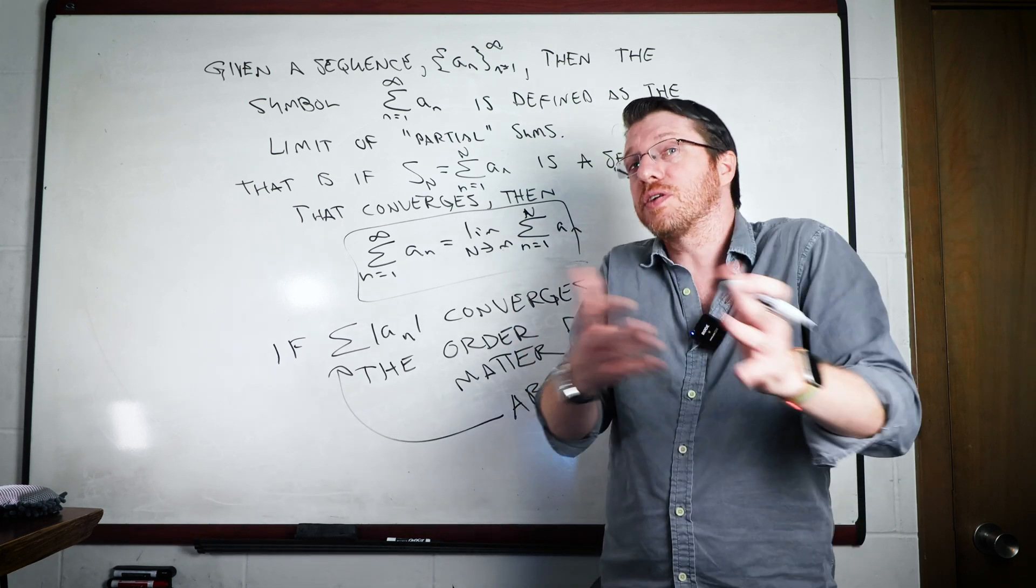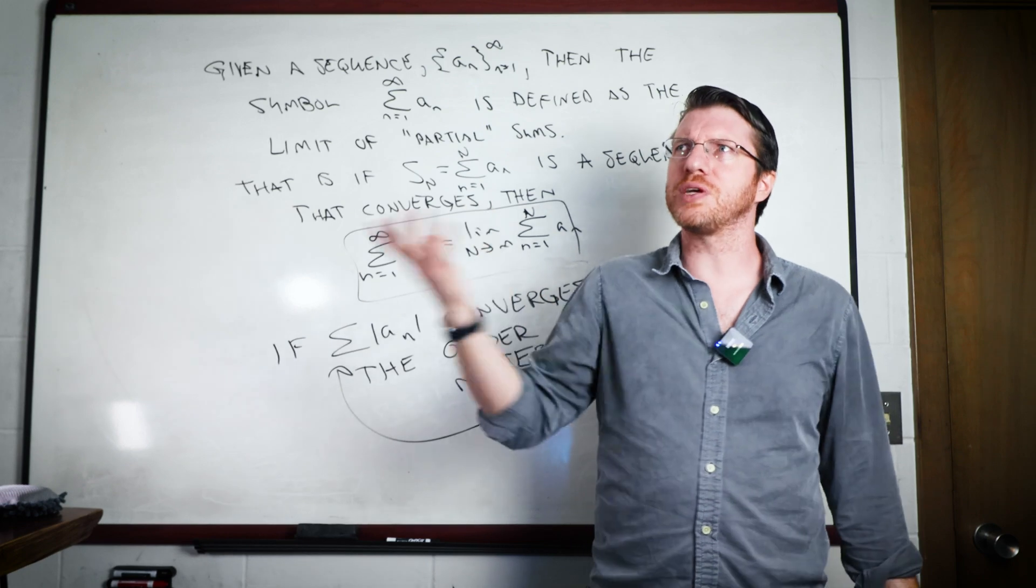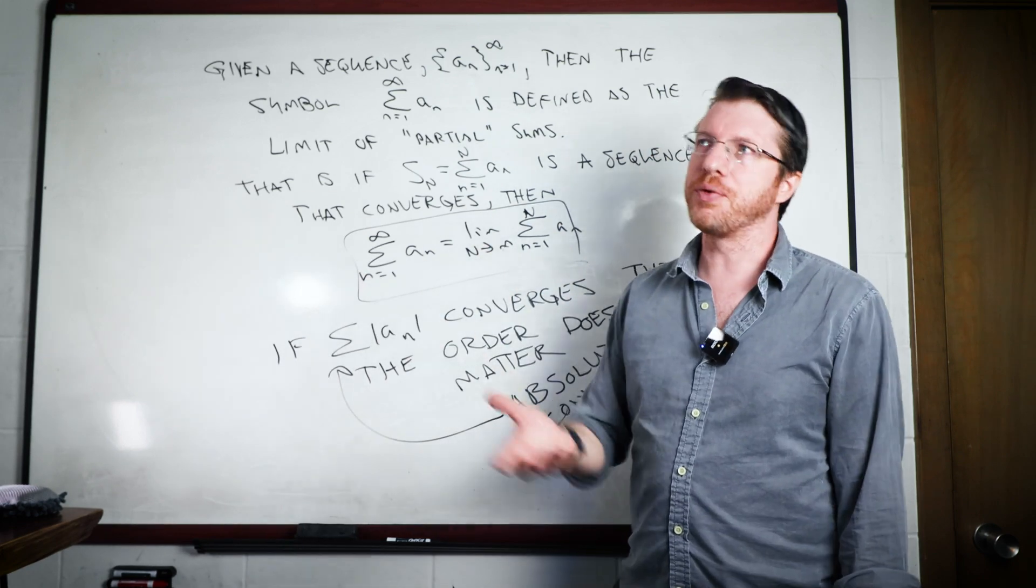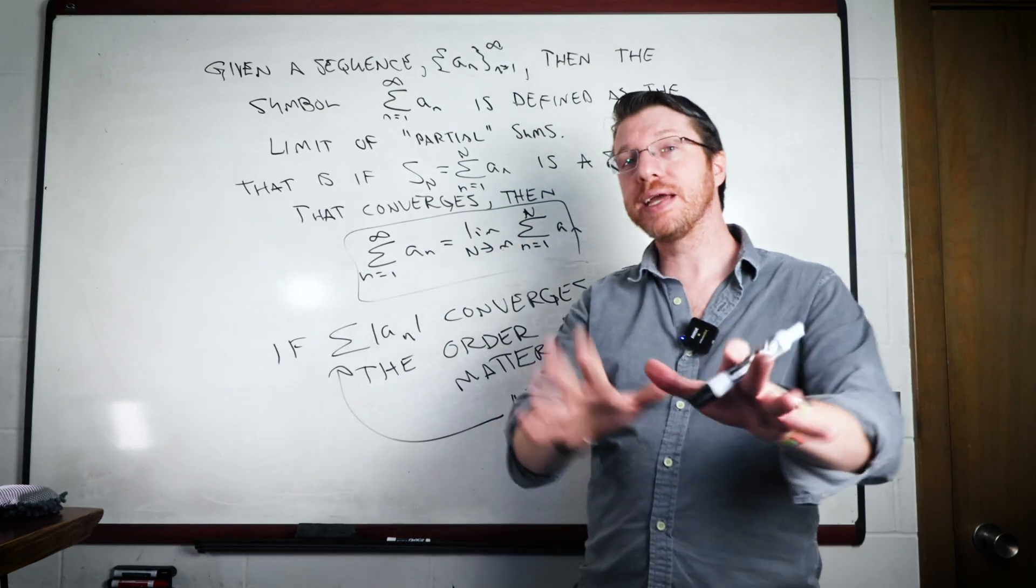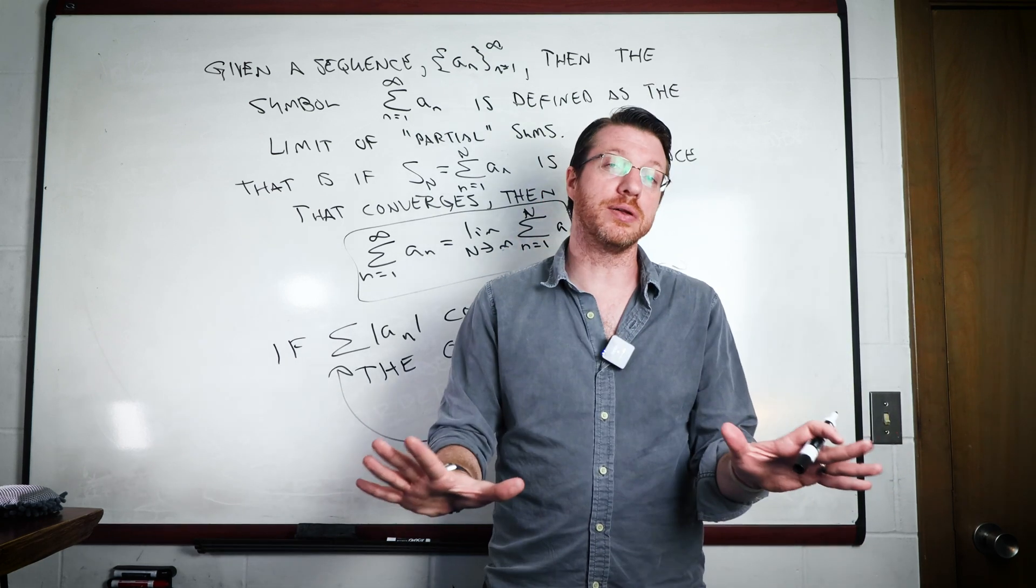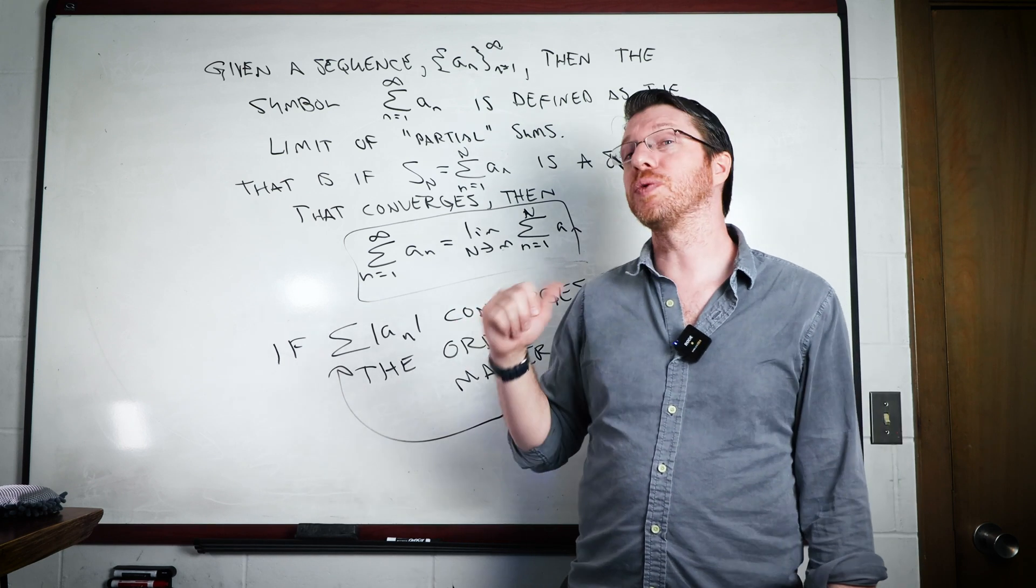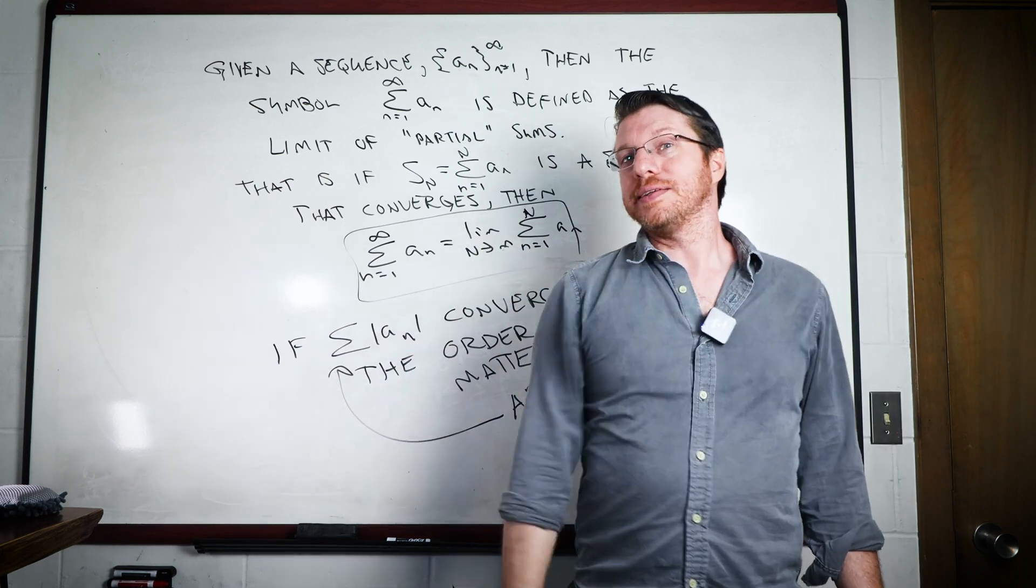We know the alternating harmonic series doesn't converge absolutely because the harmonic series was the first series we ever discovered that diverged with the terms going to zero. What Riemann came along and showed us later is that if you take any conditionally convergent series, any one at all, that you can actually make it do this thing that Dirichlet said and actually make it do a lot more.